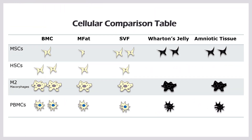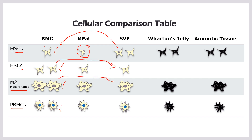This is the cellular comparison of everything we've discussed — mesenchymal stem cells, hematopoietic stem cells, M2 macrophages, and mononuclear cells. Bone marrow concentrate has mesenchymal stem cells, hematopoietic stem cells, lots of macrophages, and lots of mononuclear cells. MFAT regrettably doesn't have many free stem cells. SVF, which is not legal in the United States yet, has more mesenchymal stem cells than bone marrow, but bone marrow has more hematopoietic stem cells, more M2 macrophages, and more mononuclear cells. Wharton's jelly and amniotic tissue are all dead and dying cells — not live cell products and certainly not live stem cell products.